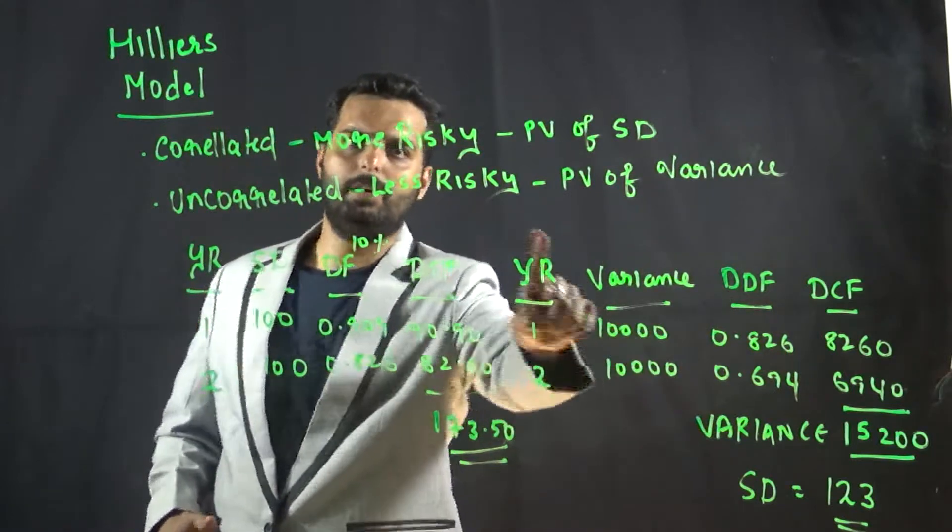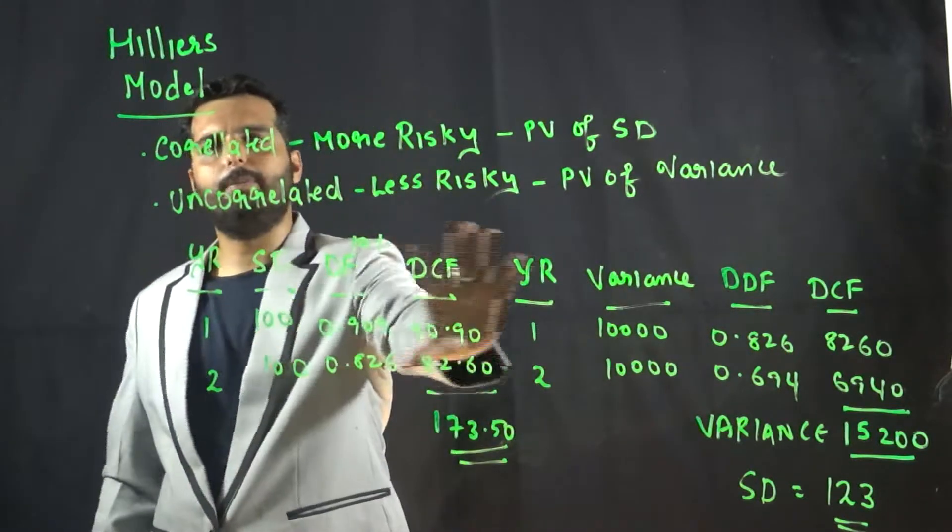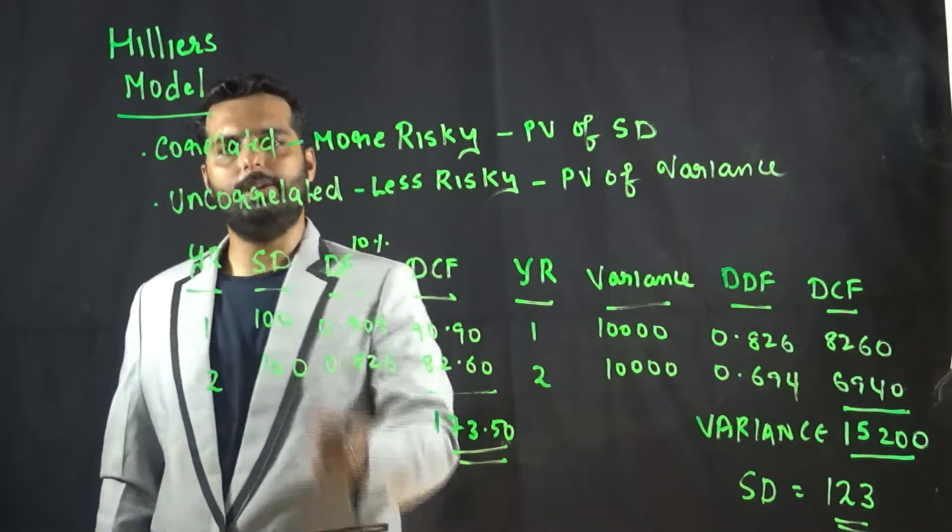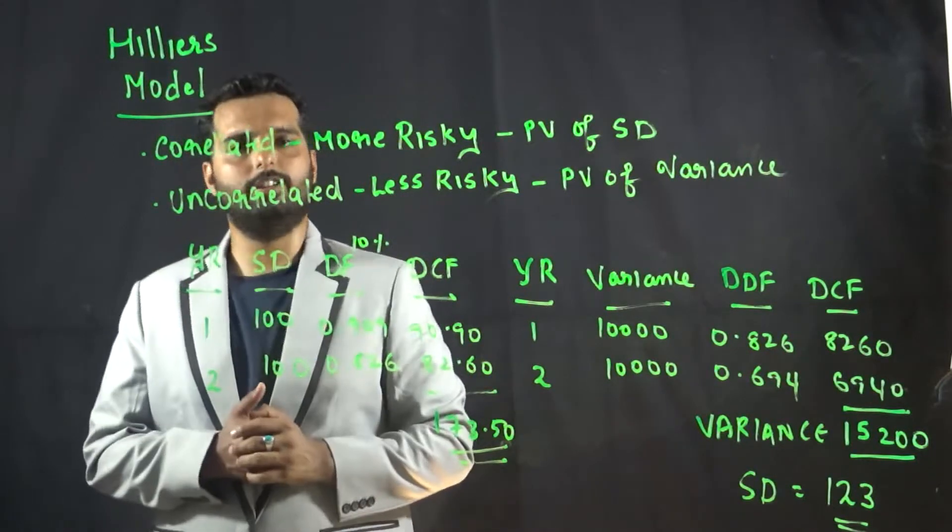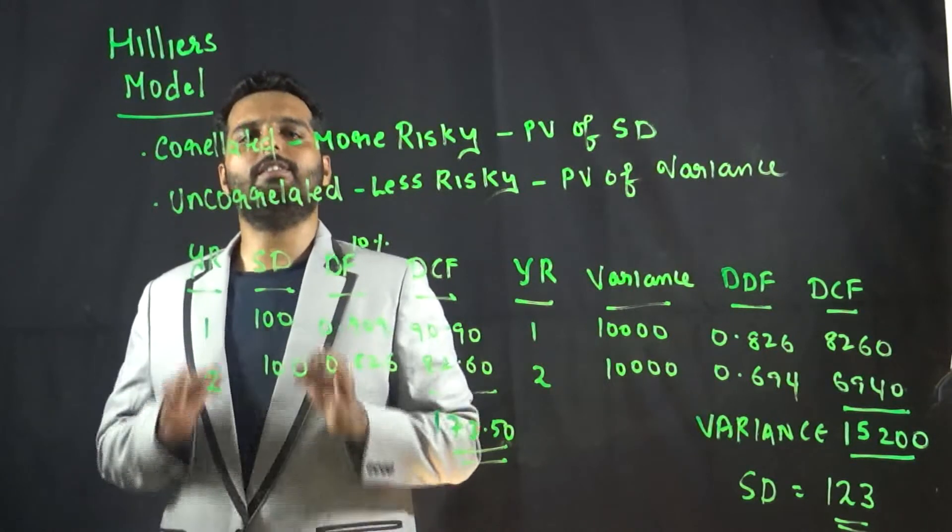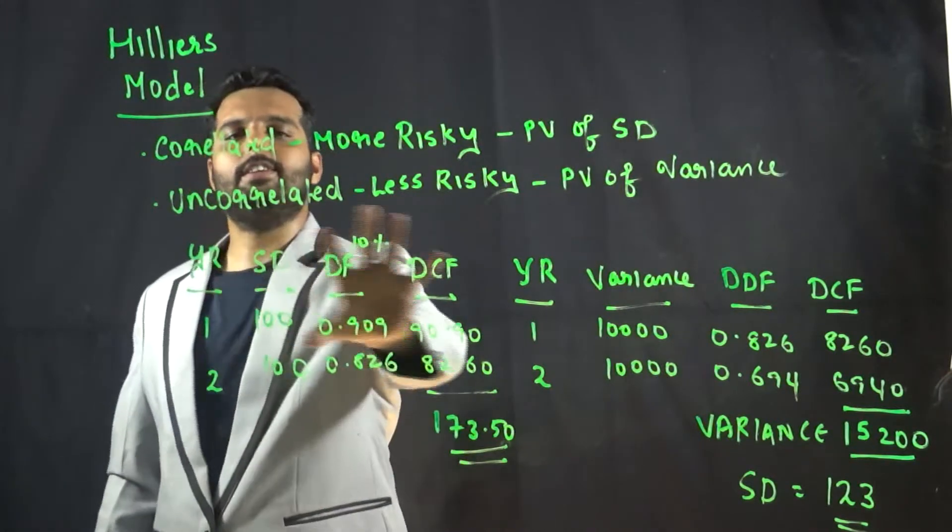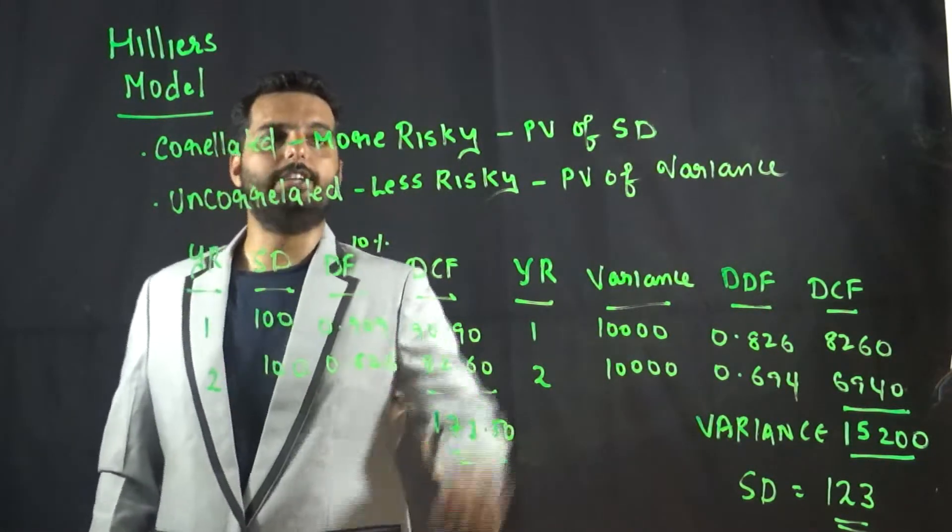Let us take a very simple numerical example to understand this. This is example number one and this one is example number two. In example one, year one the standard deviation is 100, year two also standard deviation is 100. So what Hillier says is that if this is a correlated cash flow, I should take the present value of standard deviation.